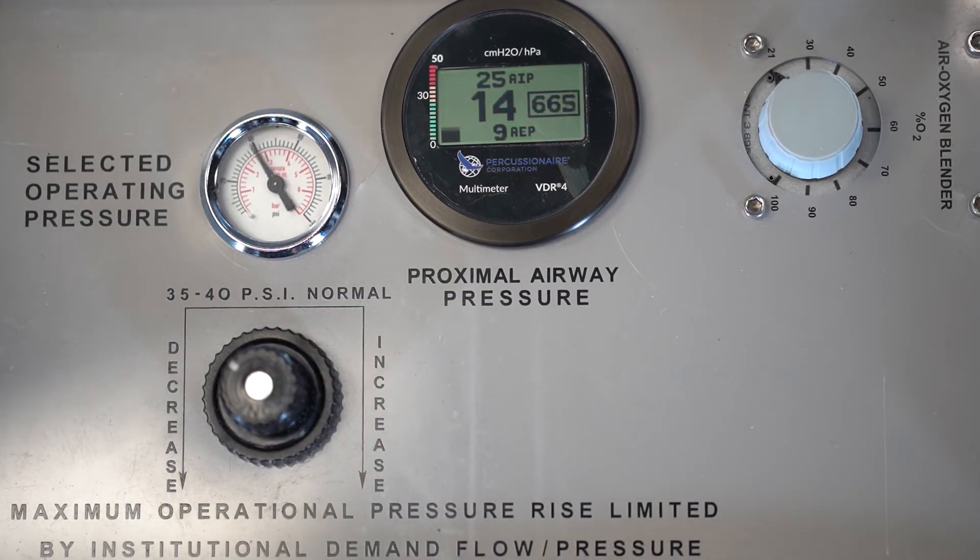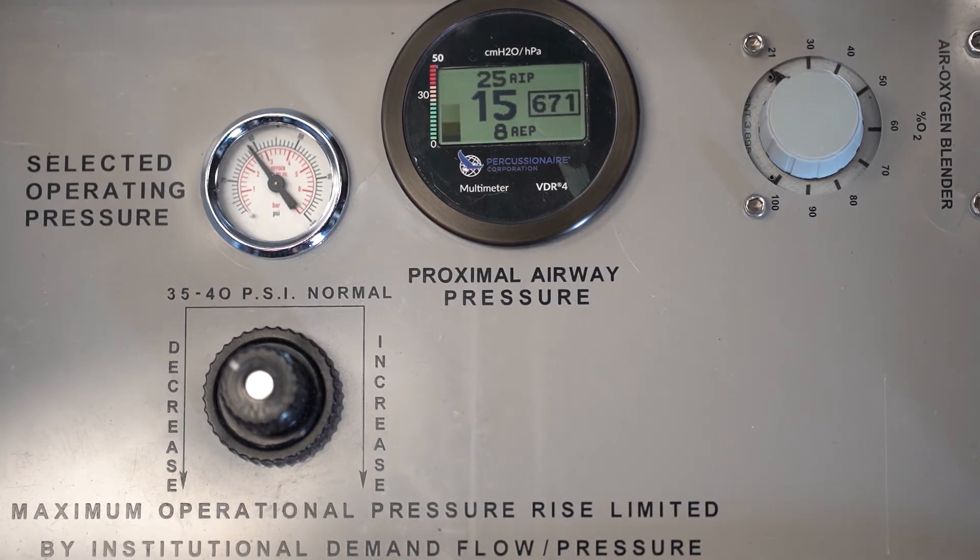So the top number is AIP, pulsatile flow, analogous to a PIP. The bottom number is AEP, oscillatory CPAP, or analogous to a PEEP. The middle number is the mean airway pressure. The number that's farthest to the right is the actual high frequency rate that the ventilator is delivering. So again, let's start over again. That pulsatile flow is supposed to be at 26. It's drifted a teeny bit, so let's increase it. I know that I'm supposed to be on an oscillatory CPAP of 8. It looks like we're there.